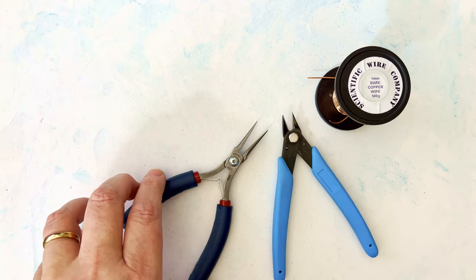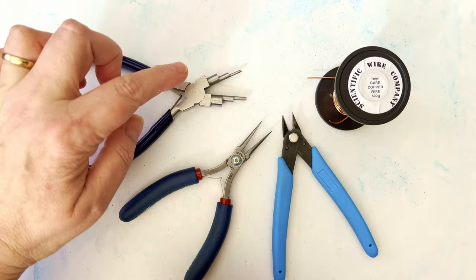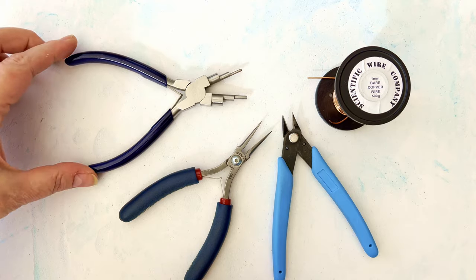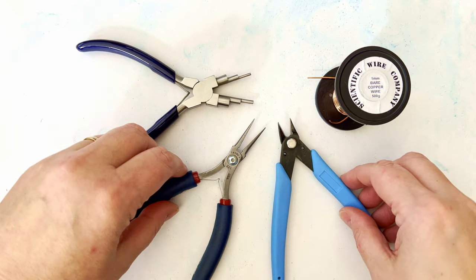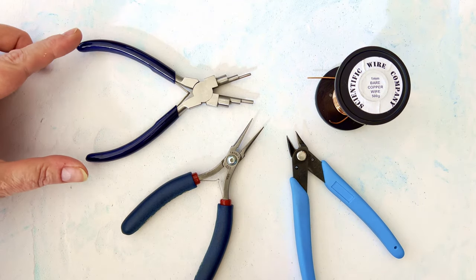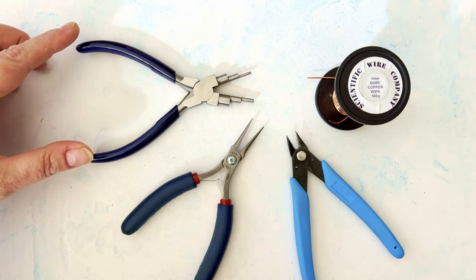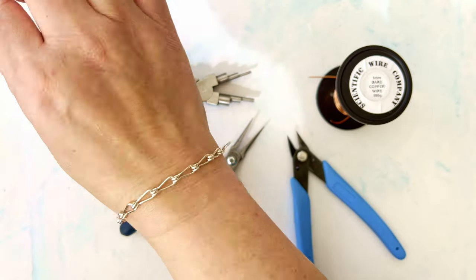You'll need a pair of flush cutters as always, a pair of chain nose pliers, and I'm using my six-step two to nine millimeter on this one. The measurements that I'm using today will be based upon the two to nine millimeter six-step bail making pliers.